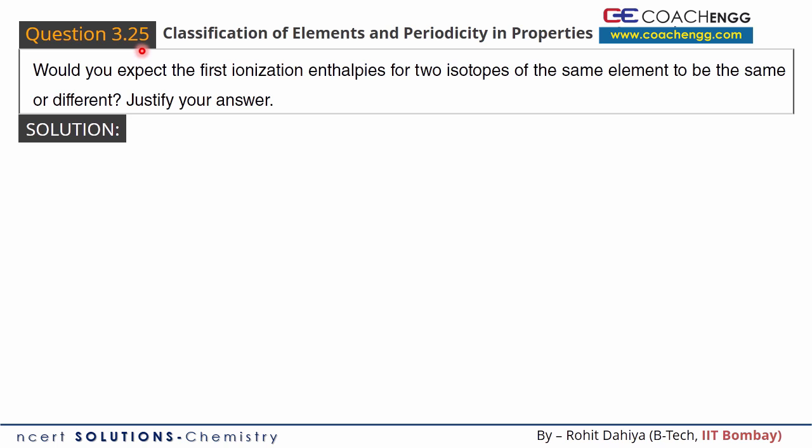Hi guys, I'm discussing question number 25 from the topic classification of elements. Would you expect the first ionization enthalpies for two isotopes of the same element to be the same or different? Justify your answer. We have two different isotopes of the same element given.